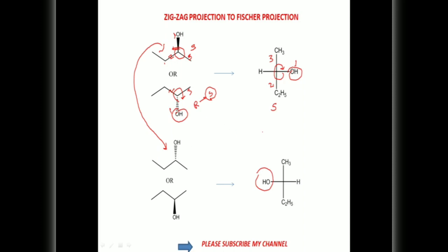We have to remember these rules for the conversion of zigzag structures to Fisher 2D structures. First, check the RS configuration: first priority, second priority, and third priority. Take the arrow from 1 to 2, 2 to 3. If that arrow is in clockwise direction, it means anticlockwise direction S — but we have to take the reverse R, because the high-priority OH group is below the plane. Now in the next case: first, second, and third priority — 1, 2, 3 — this one has R configuration because clockwise direction, so both are equal. And in another case, the arrow is anticlockwise S, but take the reverse R — so these two are also equal.